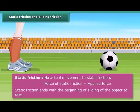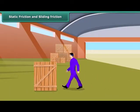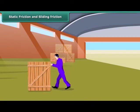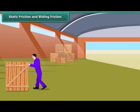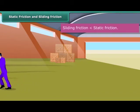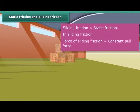When we push the ball, it starts moving. The frictional force present when one body moves slowly or slides over another body is known as sliding friction. Once a body slides, the sliding friction is reduced a little — it is less than the static friction. In sliding friction, the force of sliding friction is equal to the constant pull force.